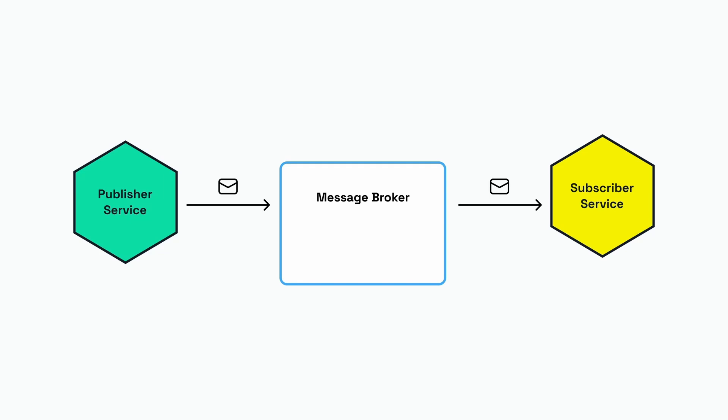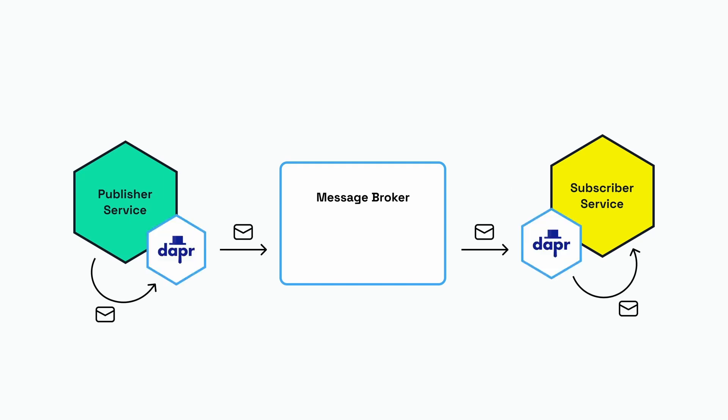Since we're dealing with Dapr, what actually happens is your application will use the Dapr API to send a message, and the Dapr runtime will forward this message to the message broker. Then the Dapr runtime on the subscriber service will receive the message and forward that to an endpoint in your subscriber service.